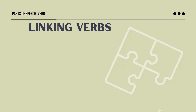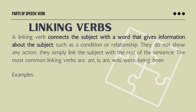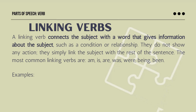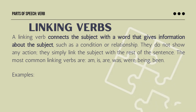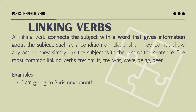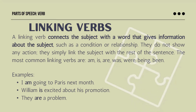Linking verbs connect the subject with a word that gives information about the subject, such as a condition or relationship. Linking verbs do not show any action — they simply link the subject with the rest of the sentence. The most common linking verbs are am, is, are, was, were, being, and been. Examples: 'I am going to Paris next month,' 'William is excited about his promotion,' 'They are a problem.'